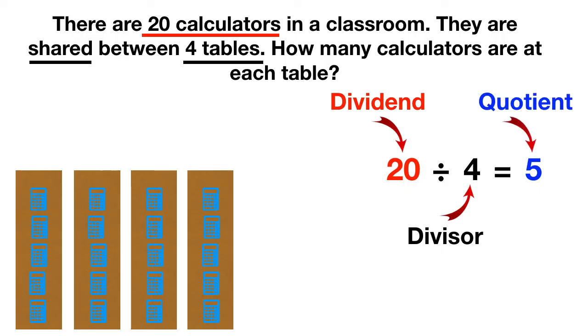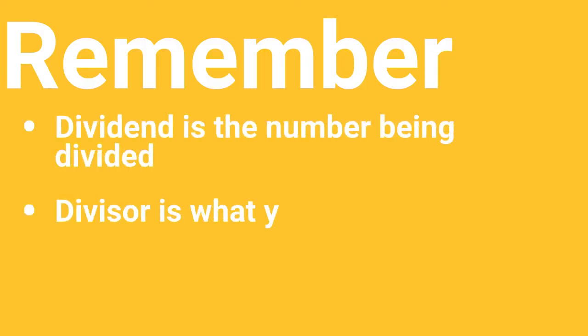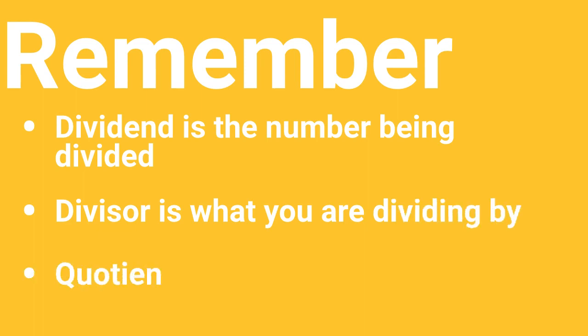So from today, remember: the dividend is the number that is being divided, the divisor is what you are dividing by, and the quotient is the answer.